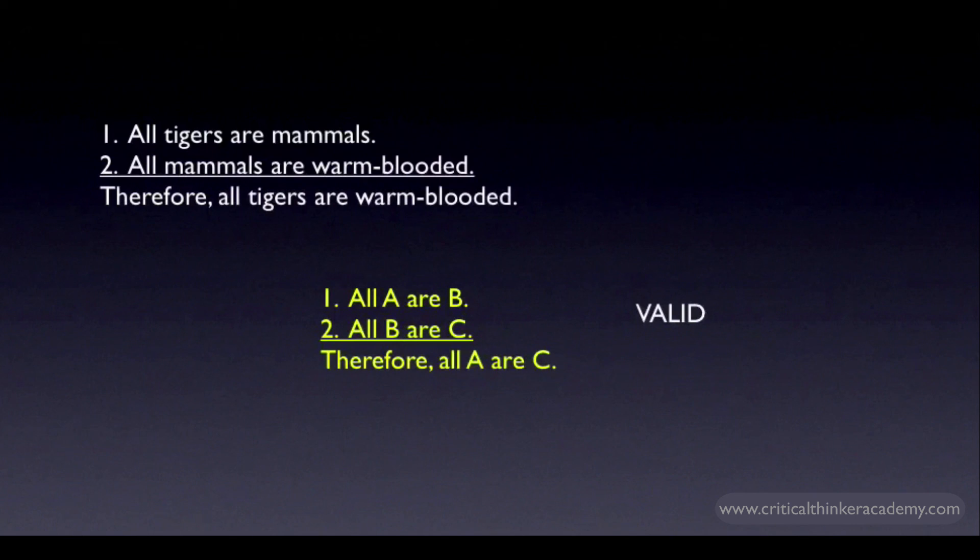And like the conditional, the inference is directional. You can argue forward, but you can't argue backward. Here's a backward version. All tigers are mammals. All mammals are warm-blooded. Therefore, all warm-blooded things are tigers. Clearly, an invalid argument. I'm warm-blooded, and I'm not a tiger.